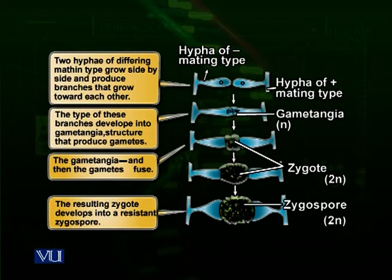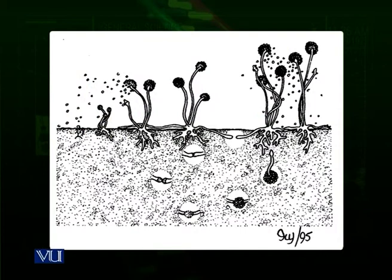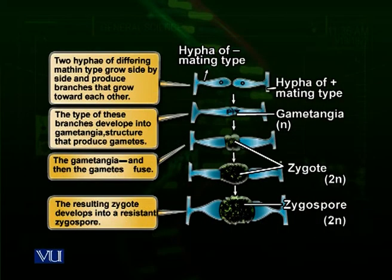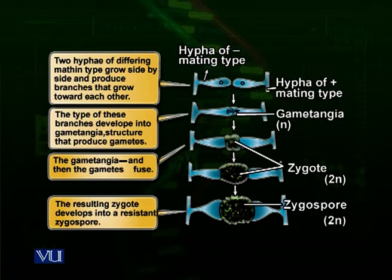Another diagram shows the process of sexual reproduction in hyphae. When hyphae of two different mating types grow side by side — for example on a bread — and come across each other, the tips of these branches develop into gametangia, which are gamete-like structures. The gametangia fuse and form gametes, and these gametes fuse to produce a zygote, also called a zygospore. It has 2n chromosomes and is a harder structure that can withstand harsher environments.